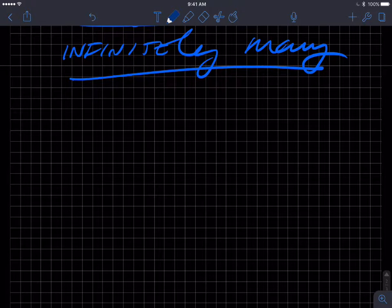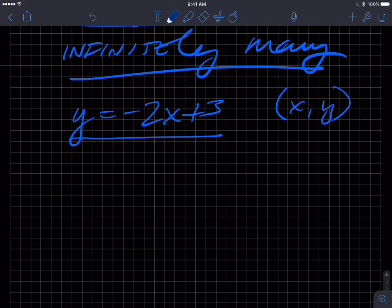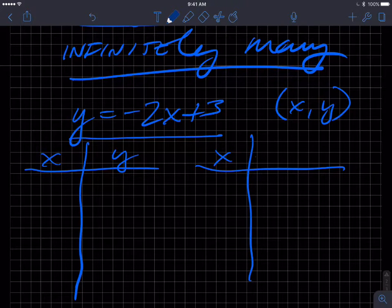Infinitely many solutions. How can we represent that infinitely many solutions, that set? Well, one way to do it is y equals negative 2x plus 3. That is one way to represent that set of values, that set of pairs or solutions, in the form of x comma y, a coordinate pair. Another way to represent that is a T-chart.